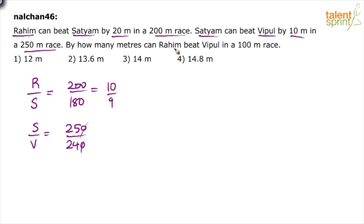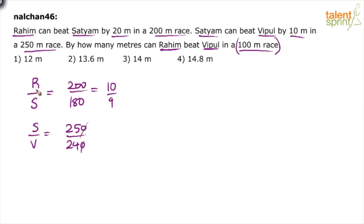Now we have to find by how many meters Raheem can beat Vipul in a 100 meter race. First, let's just get the ratio between Raheem and Vipul. R by S is 10 by 9, meaning by the time Raheem travels 10 meters, Satyam travels only 9 meters. S by V is 25 by 24, meaning by the time Satyam travels 25 meters, Vipul travels only 24 meters. To find R by V, we multiply the two ratios: R/S × S/V — the S cancels, giving us R by V.